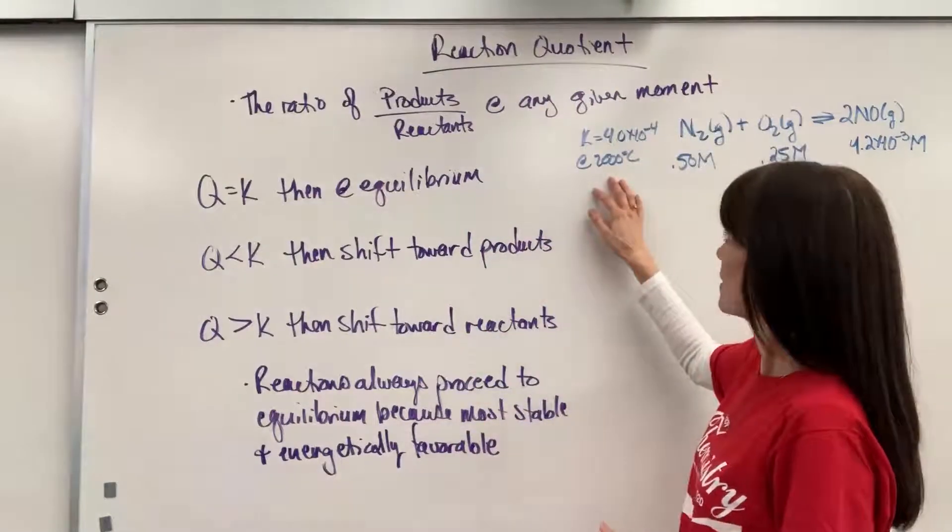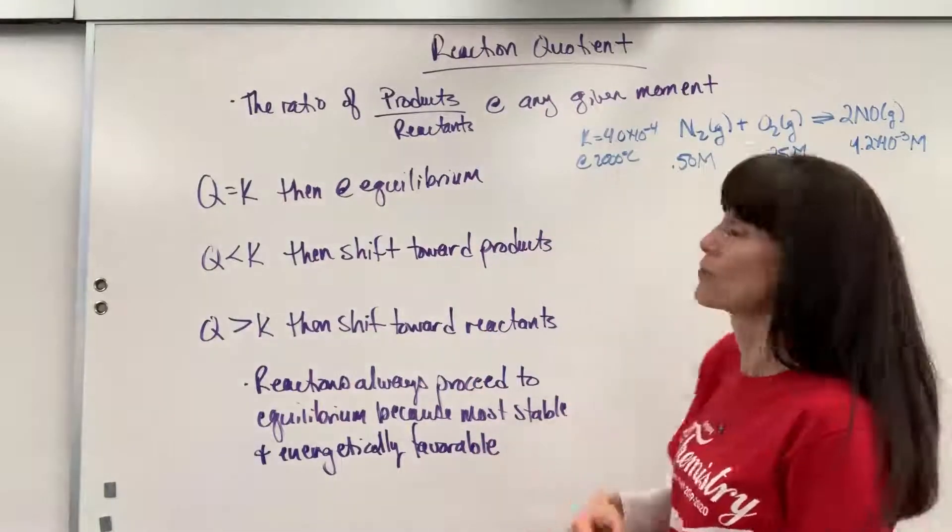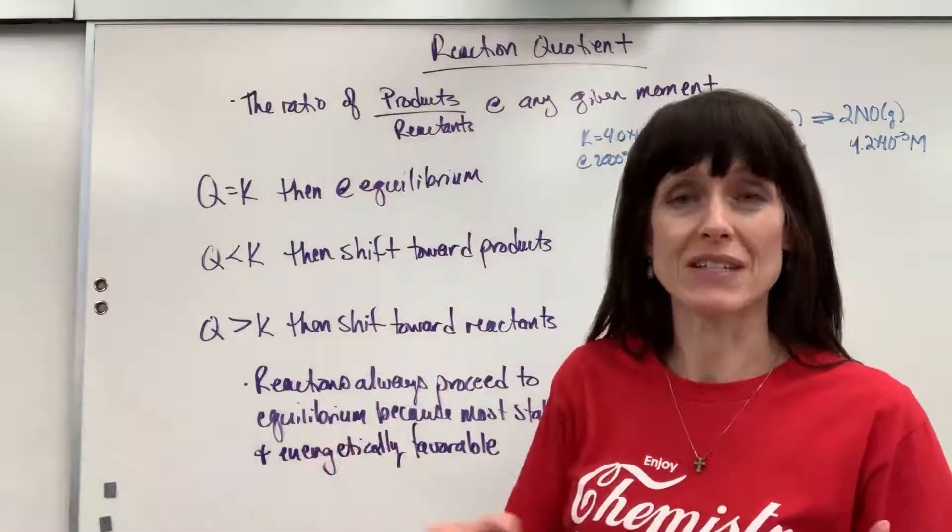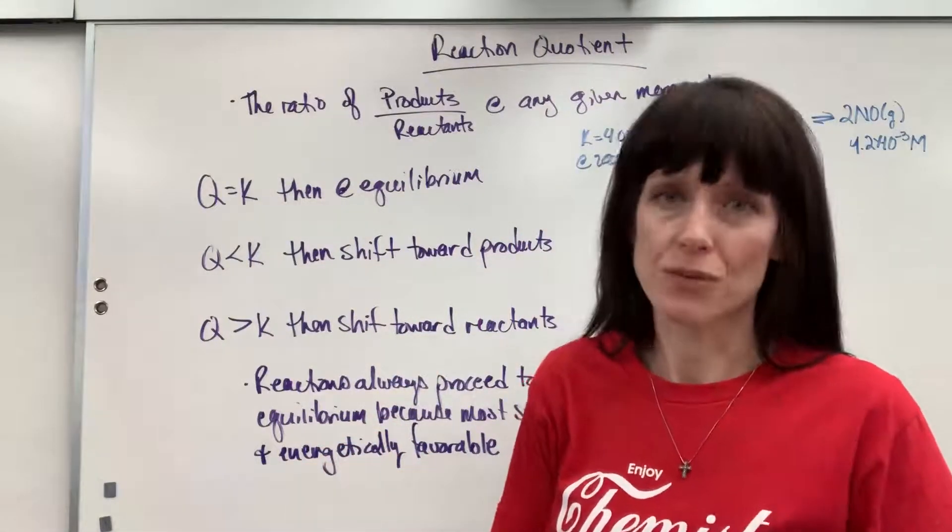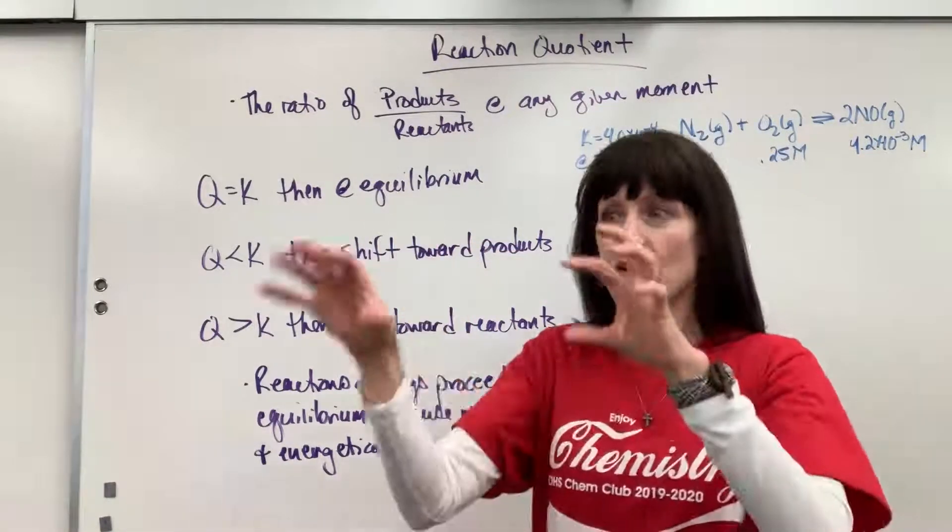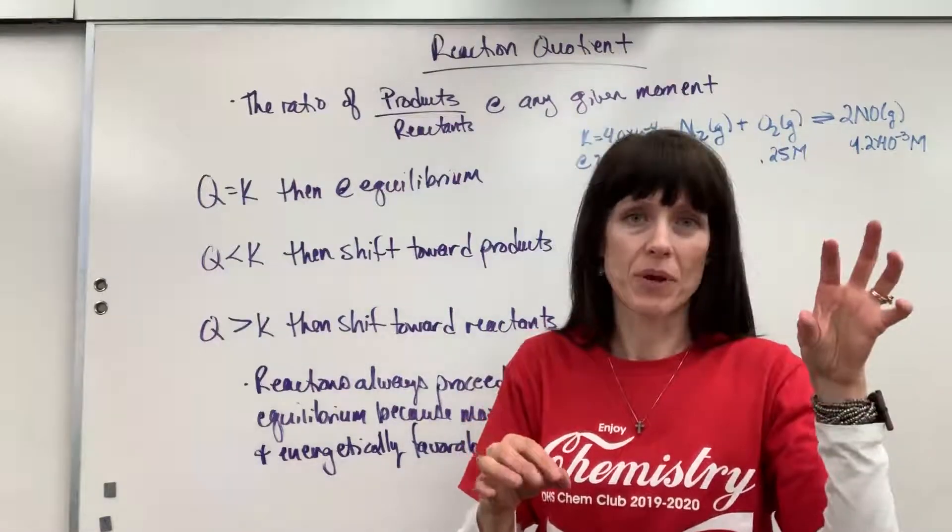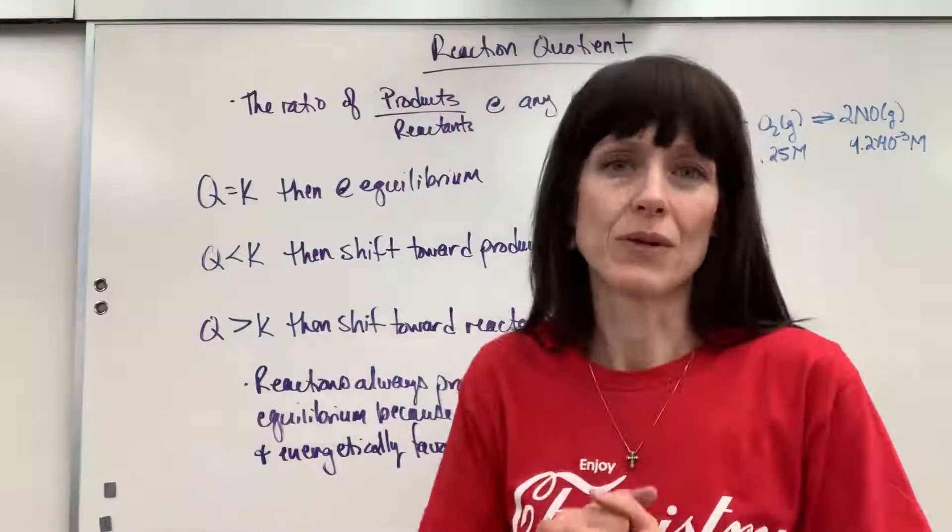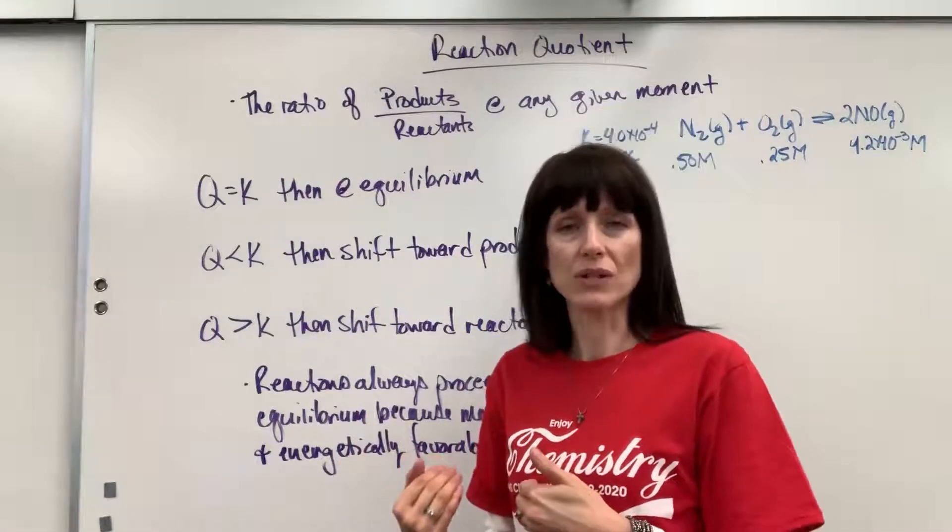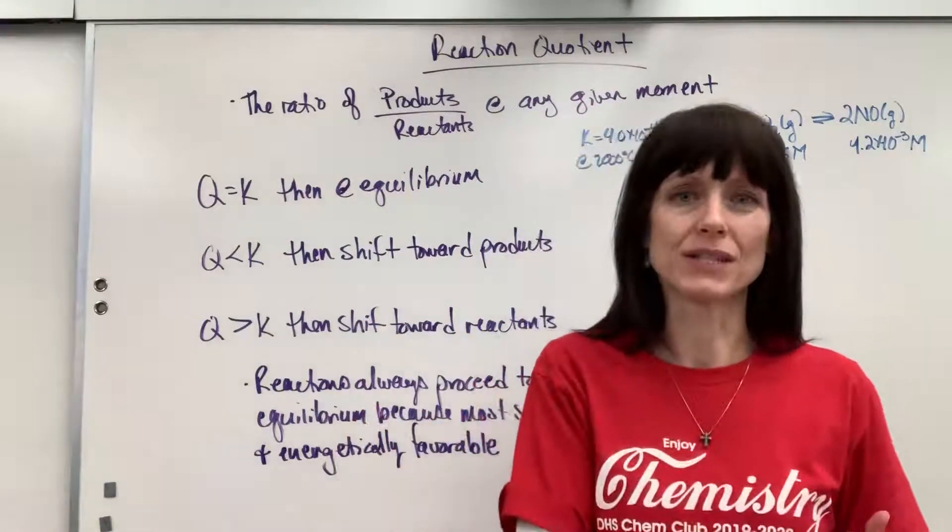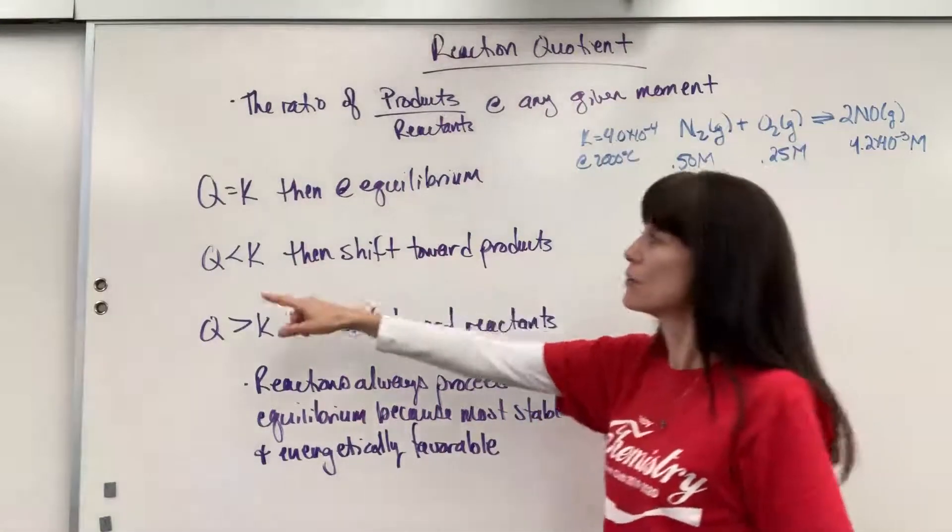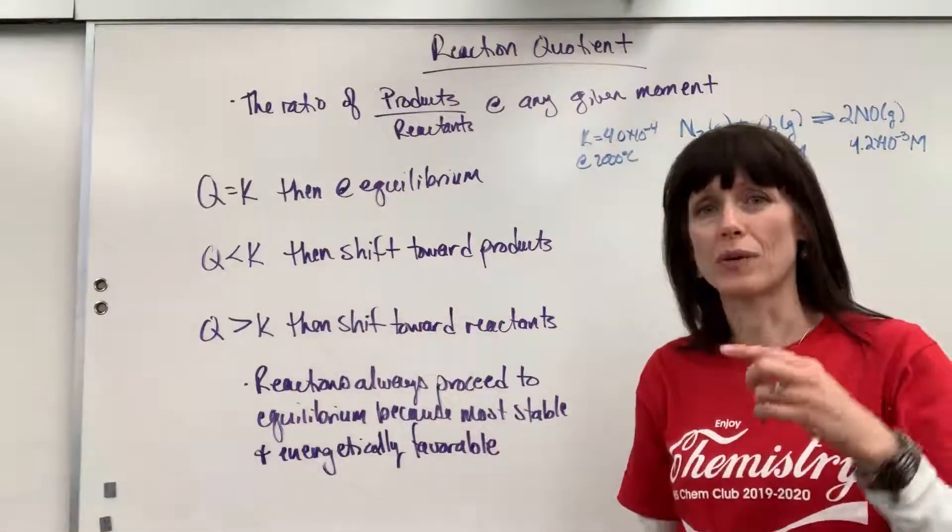If I were to find that the Q value at this moment was 6.2 times 10 to the minus 5, which is smaller, it's still going to equilibrium. We just jumped in and took a sample of the reactants and the products, and I can see we're not quite at equilibrium yet. So then the question arises: what does it need to do to go to equilibrium? Which way is it going to go? Is it going to shift more to reactants or more to products? If Q is less than K, then it will shift toward products.